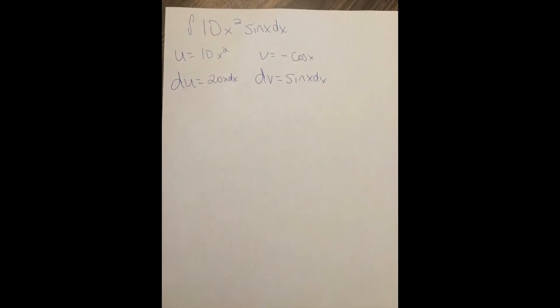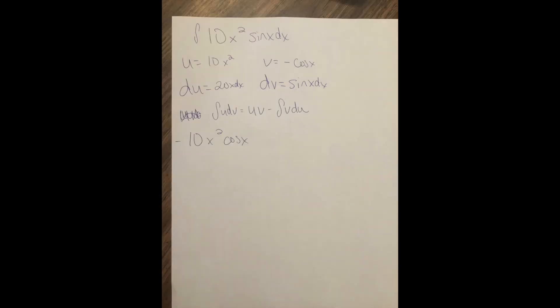and then we plug in u, v minus the integral of v du. Don't let the negatives trick you. It is u times v, but to write 10x squared times negative cosine x, the proper way to do that is to put negative 10x squared cosine x. I do that a lot.